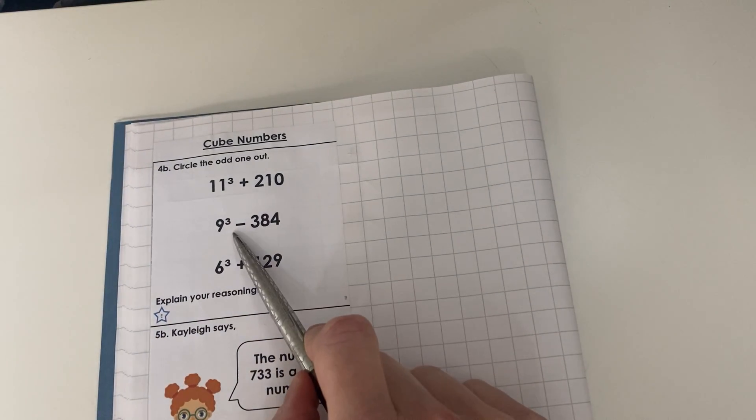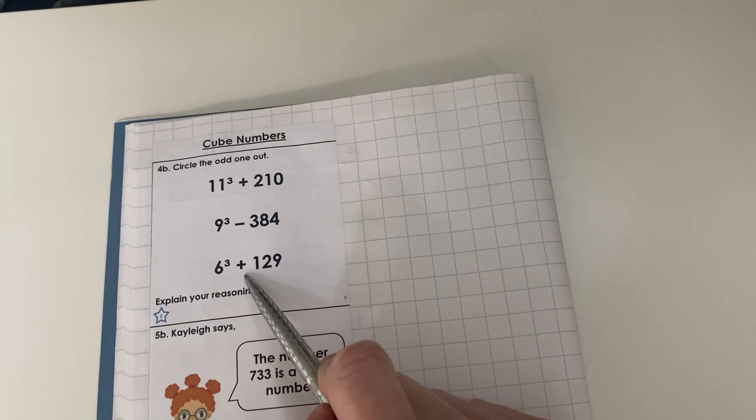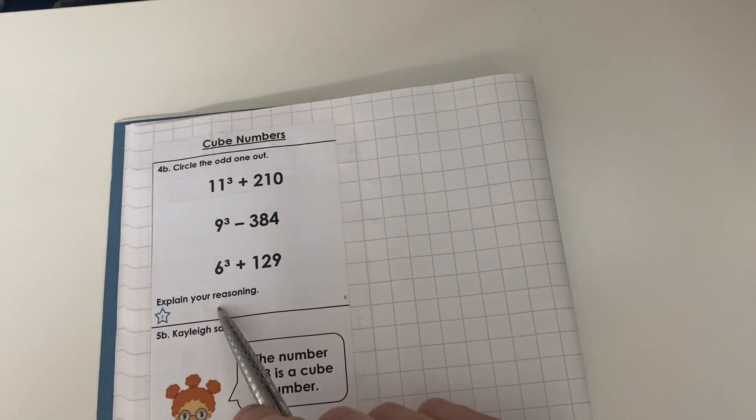11³ + 210, 9³ - 384, 6³ + 129. Explain your reasoning.